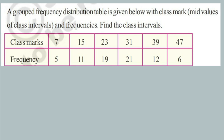For these kinds of problems, the first step is to find the difference between any two successive class marks. We call this difference h. So h is equal to the difference between any two successive class marks — for example, 15 minus 7 equals 8.